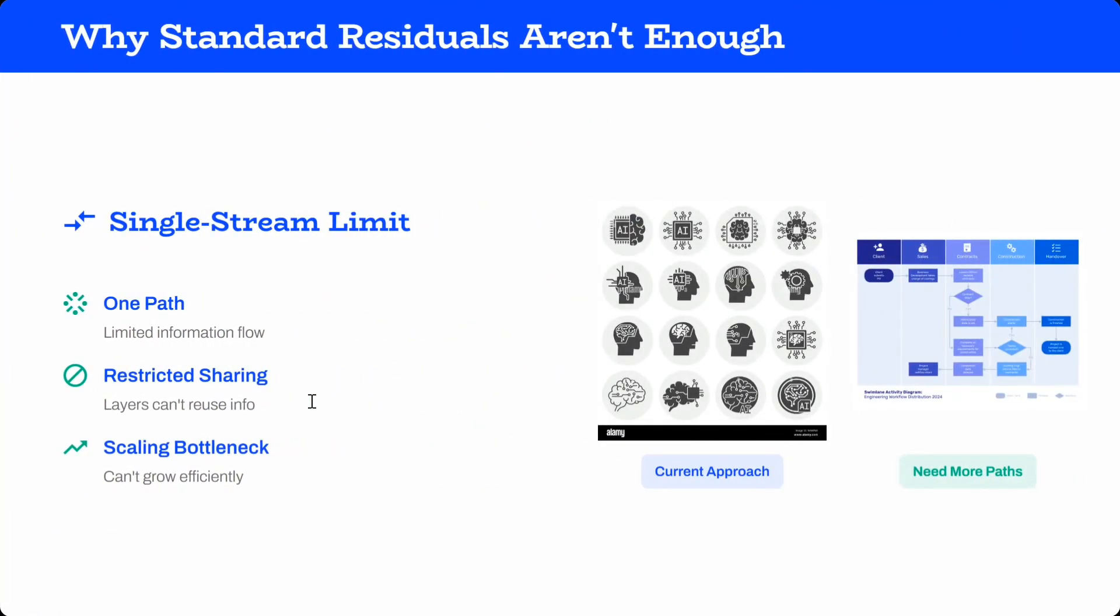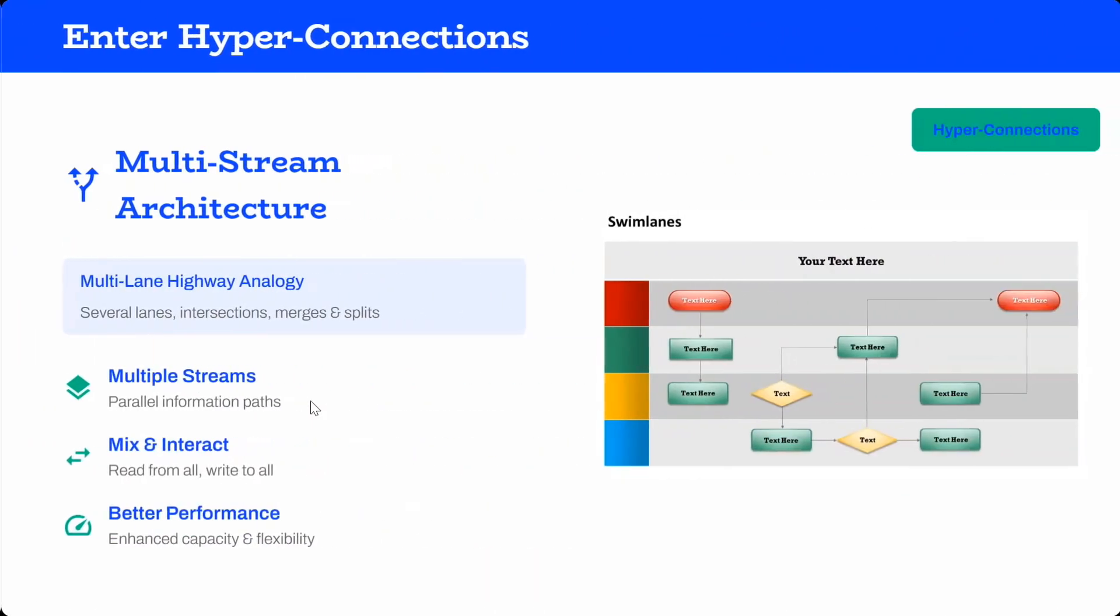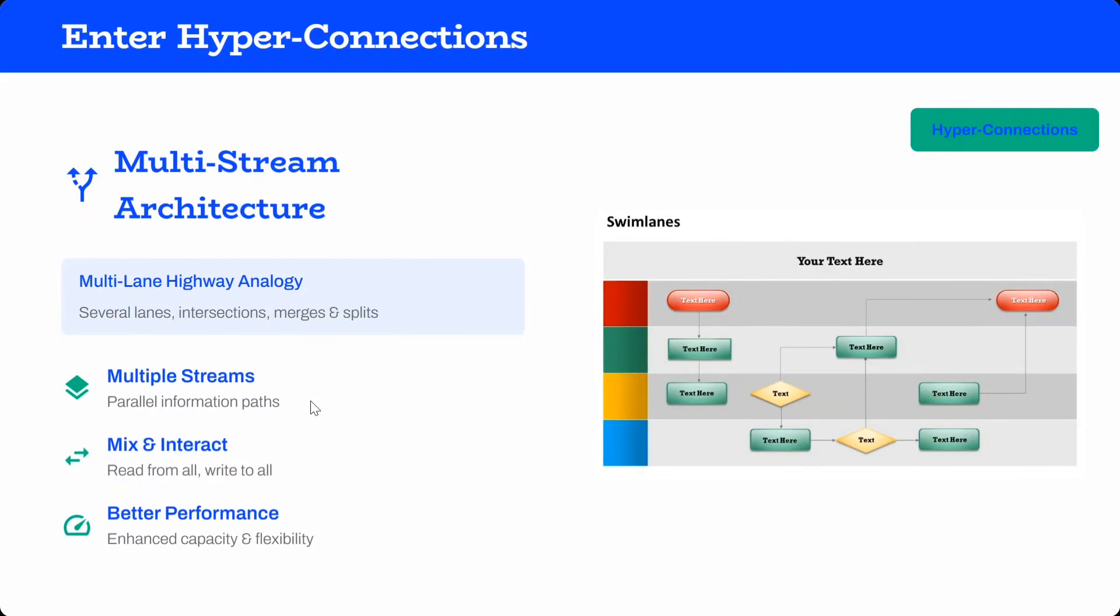Why standard residuals aren't enough: they're single stream with limited information flowing, restricted sharing happens, layers can't reuse it, and scaling bottleneck - can't grow efficiently. Just think about how constant it becomes when you're passing every other information. Limited information is passing.